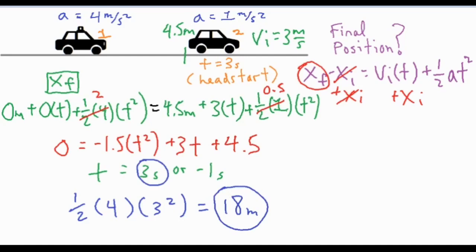After rearranging, I put everything on the right side. Combining ½ and 2 (the acceleration coefficients) gives 2 and 0.5 respectively. Subtracting the 2t² term from both sides gives a coefficient of −1.5t², then +3t, and +4.5 from the initial position. Using the quadratic formula or graphing to find where it intersects the x-axis gives two answers: t = 3 seconds and t = −1 second. Since negative time isn't valid, the police car catches up after t = 3 seconds.